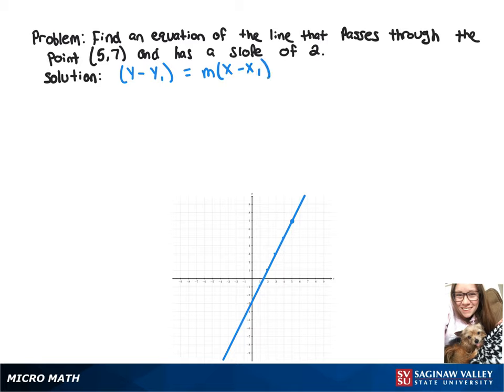So we've got a point that we can sub in, and we've got a slope to sub in, so we'll do y minus 7 equals 2 times x minus 5.